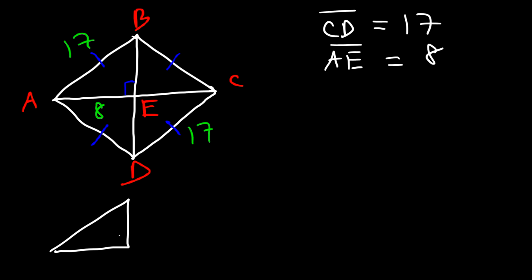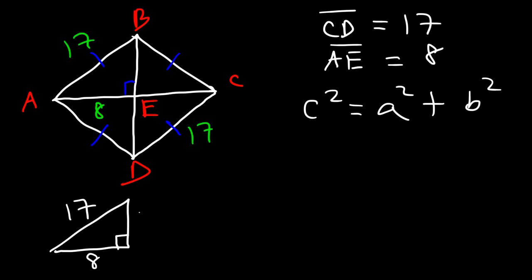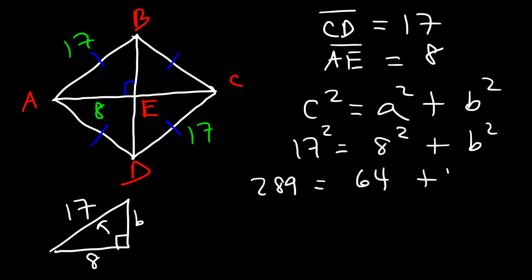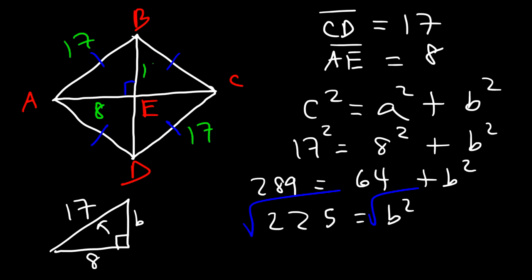We can calculate BE because the rhombus can be broken into four congruent right triangles. For the right triangle, the hypotenuse is 17 and the base is 8. Using the Pythagorean theorem: 17 squared is 289, 8 squared is 64, and 289 minus 64 is 225. Taking the square root of 225 gives 15, so BE is 15 units long.